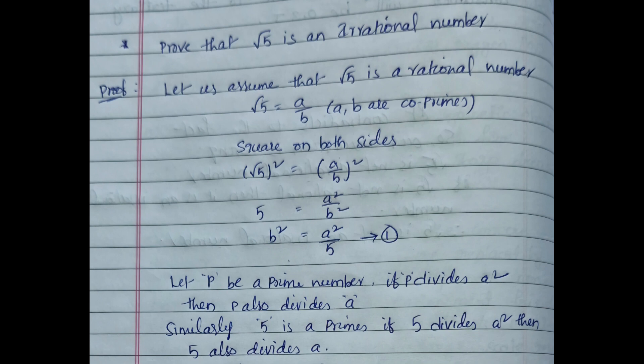Here I am explaining how root 5 is an irrational number. First, I am assuming that root 5 is a rational number, so root 5 equals a by b where a and b are co-primes. Squaring both sides: root 5 squared equals a by b squared, which gives 5 equals a squared by b squared. Therefore b squared equals a squared by 5 — this is equation 1. We use the theorem: if p is a prime number and p divides a squared, then p also divides a.